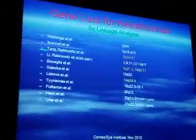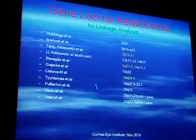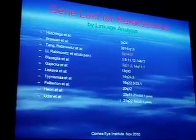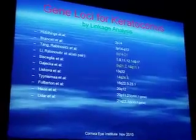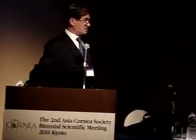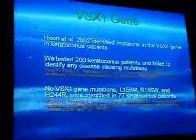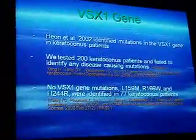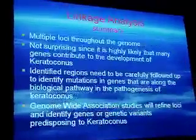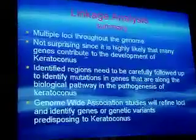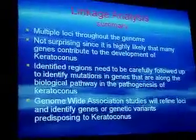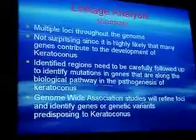This is a synopsis of all the linkage sites identified so far for keratoconus — they are scattered all over the human genome, and interestingly there are several areas which overlap: chromosome 5 in three studies, and chromosome 14 in two to three studies, so these areas need to be looked at more carefully. I'd like to mention the VSX1 gene, reported as contributing to keratoconus. We looked at over 200 patients with Tony Aldabi at UCLA and were unable to find any disease-causing mutations in VSX1, so we dismissed this as the causative gene for keratoconus. In summary, there are multiple loci across the genome, which is not surprising because many genes likely contribute to keratoconus.